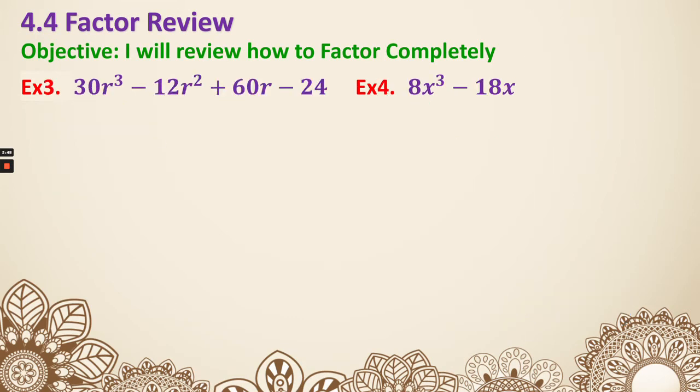Next, example 3. We're going to see there are four terms, so we are going to do factor by grouping. Before that, we need to see if we have any GCF, and in this case we do. We have a GCF which is 6. Take that out. 6 times 5r cubed minus 2r squared plus 10r minus 4.